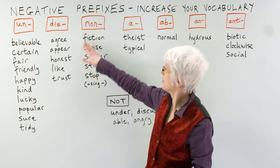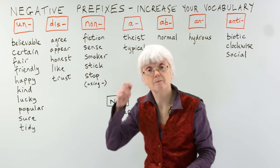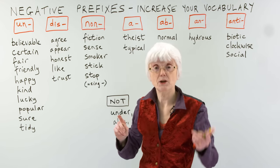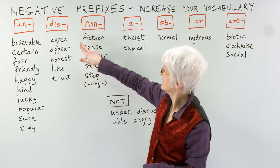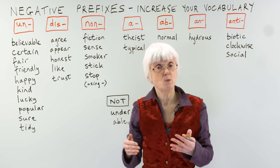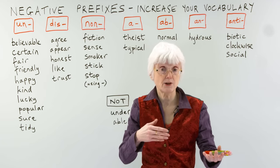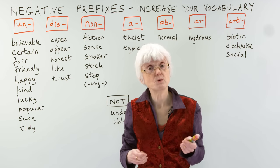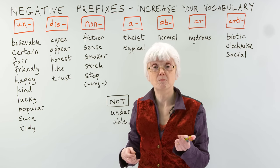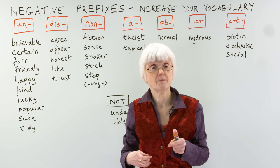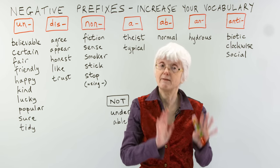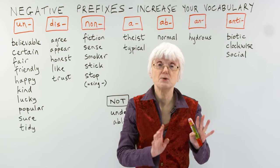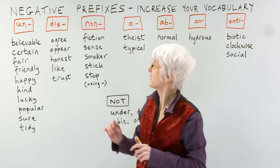Let's move on to the next column. DIS is another prefix to turn words to the negative. So, if you agree with someone, you say yes, I think so too — I agree. But if you don't agree with them, then you disagree. I'm sorry, but I have to disagree with you there. I don't think the same as you.